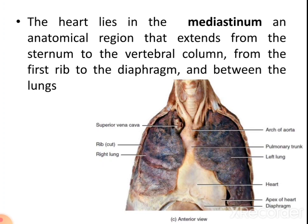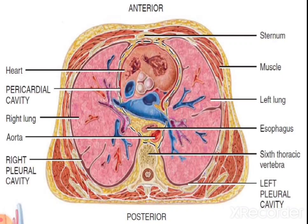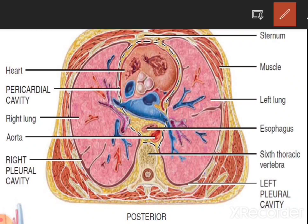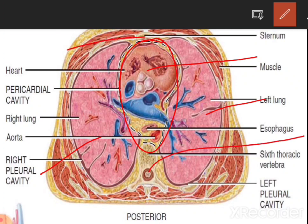Here we can see the heart in the mediastinum, the space between the two lungs, shown in cadaveric position. In this transverse section of the thoracic cavity, we can find the lungs and the space between them is known as the mediastinum. The heart is on the anterior side, located behind the sternum and in front of the thoracic vertebrae.